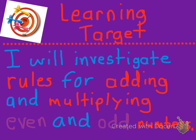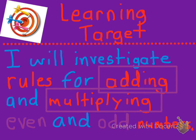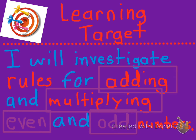So, to closely read that again, we're going to do a little investigation — a math investigation of rules for adding. What happens when we add and multiply two specific types of numbers: even numbers and odd numbers? So we're going to see what happens when we do those.